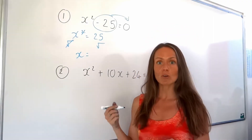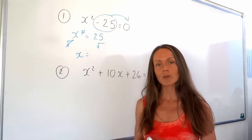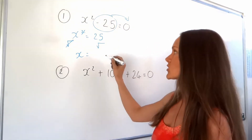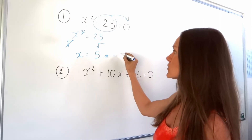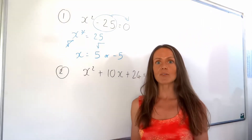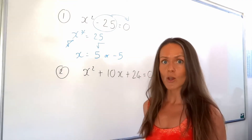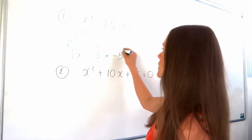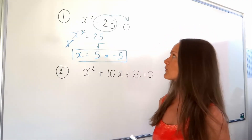On the right-hand side, you've got to square root 25. Be careful because when you square root, you get two answers. The square root of 25 is 5, but it could also be negative 5, because minus 5 times minus 5 is also positive 25. So that's the first method — nice and quick and easy.